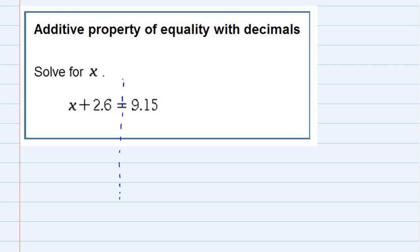So I would like to move that to the other side to get the x by itself. So what I need to do is I need to do the opposite of adding 2.6. I need to subtract 2.6.